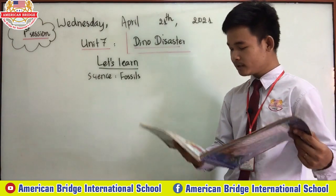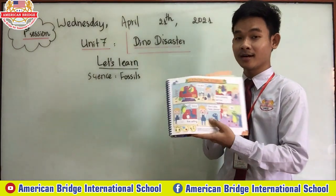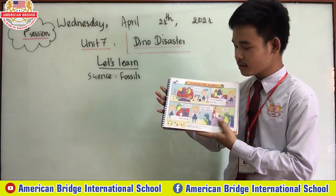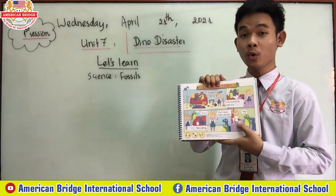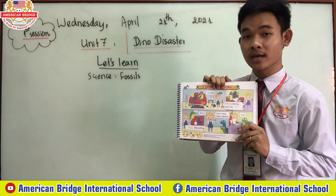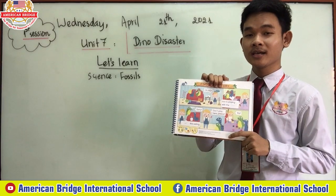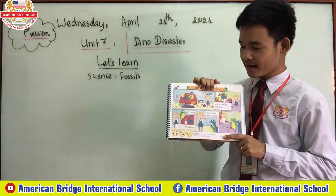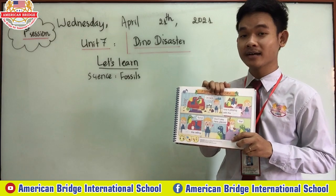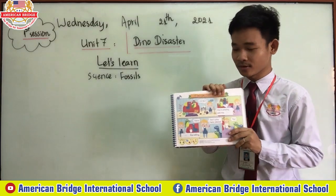Open your book on page 91. Teacher will review this. So who is Dinosaur in our story? Easy's friend is a Dinosaur. She is a Dinosaur.